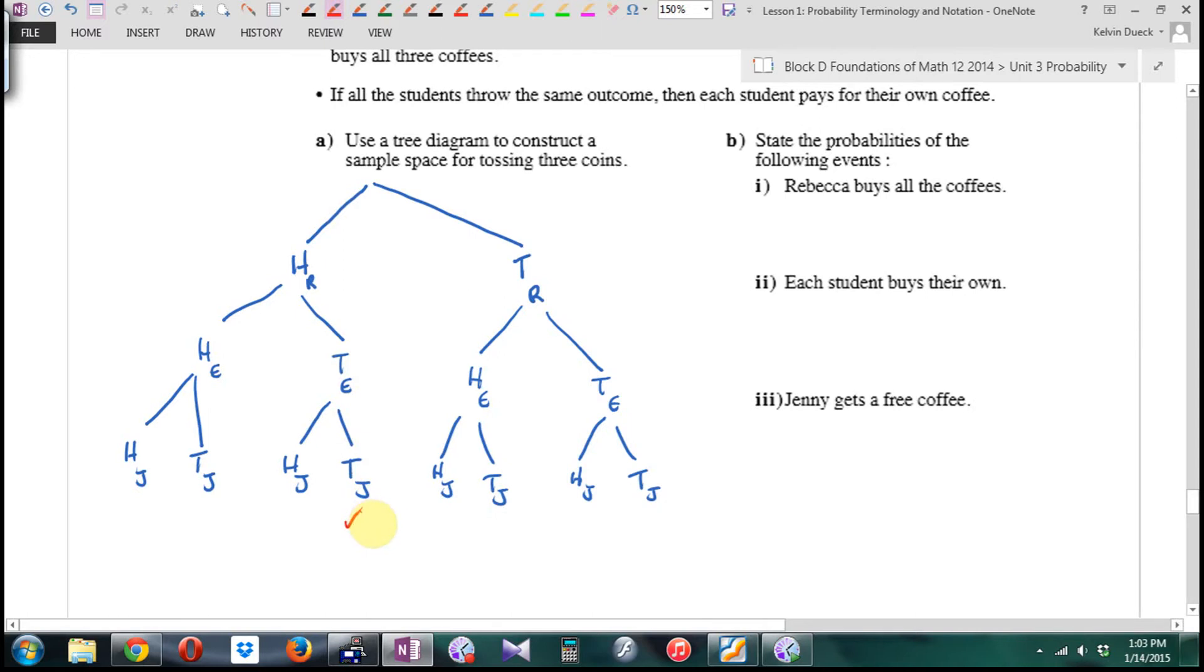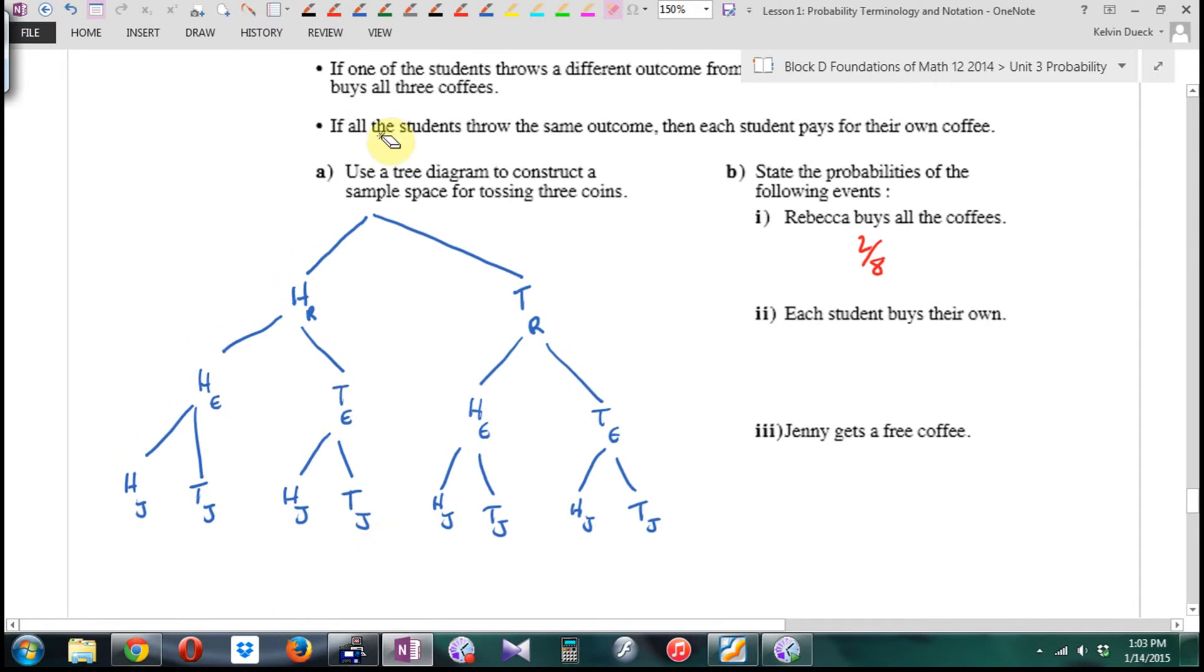Now, let's actually continue. It says if one of the students throws a different outcome from the other two, that student buys all three coffees. So what does event B, part one, want me to do? Rebecca buys. For that to occur, she has to throw different from the other two.